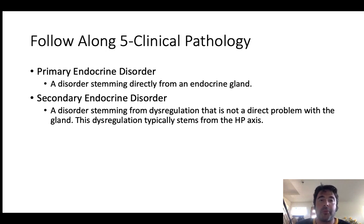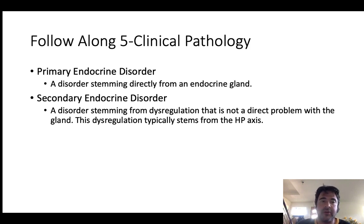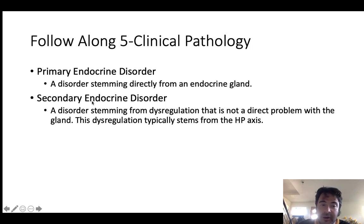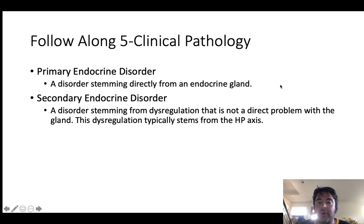When looking at labs associated with the thyroid or adrenal glands, the first question to ask is: are we dealing with a primary endocrine disorder, which stems directly from the endocrine gland, or a secondary endocrine disorder, which stems from somewhere other than the gland producing the active hormone? Oftentimes secondary disorders stem from the HP axis — meaning the problem is in the hypothalamus or pituitary gland. A secondary disorder is not necessarily better; often it's worse because you don't want problems in your brain or pituitary gland.